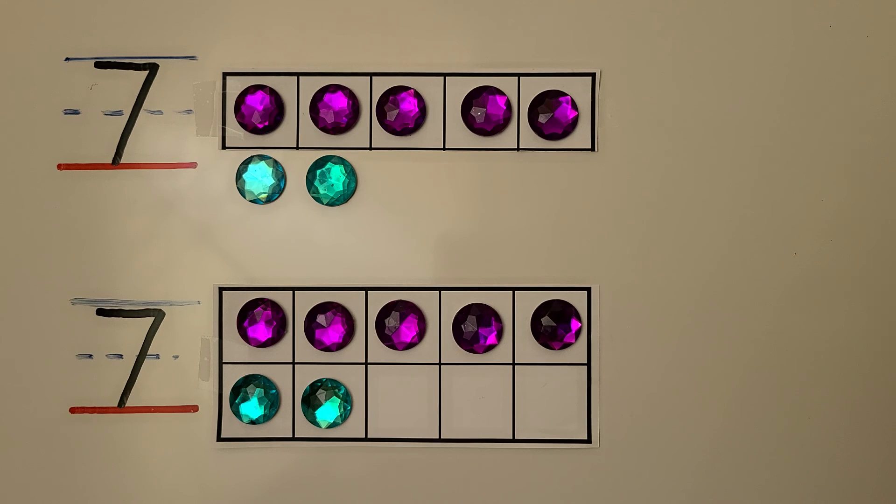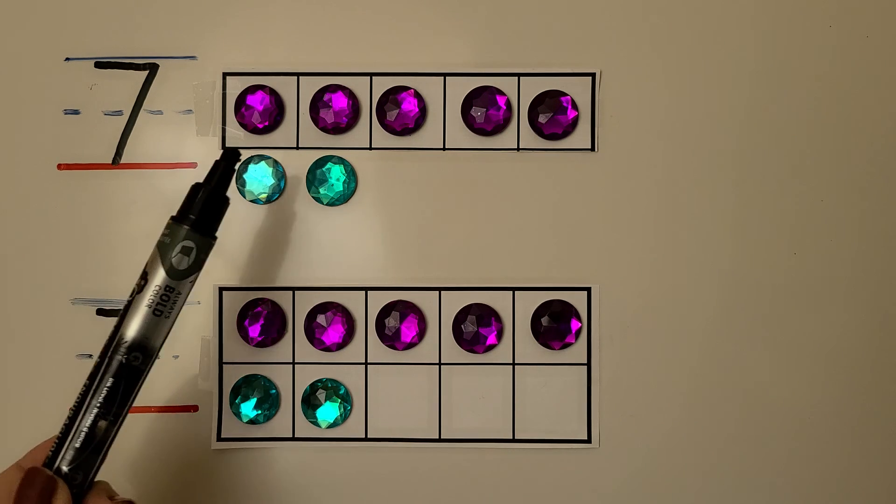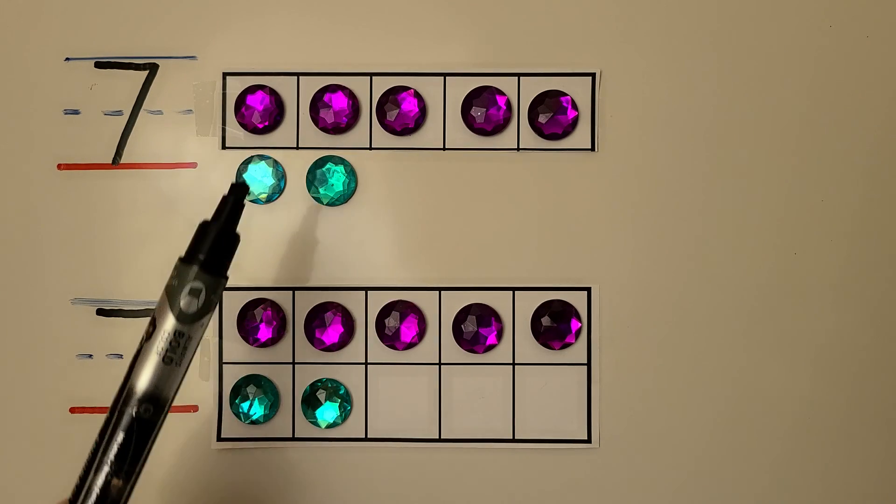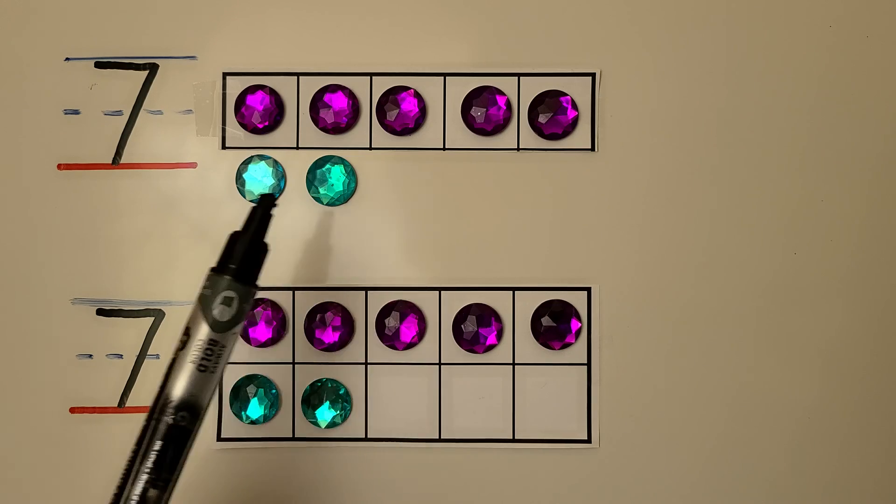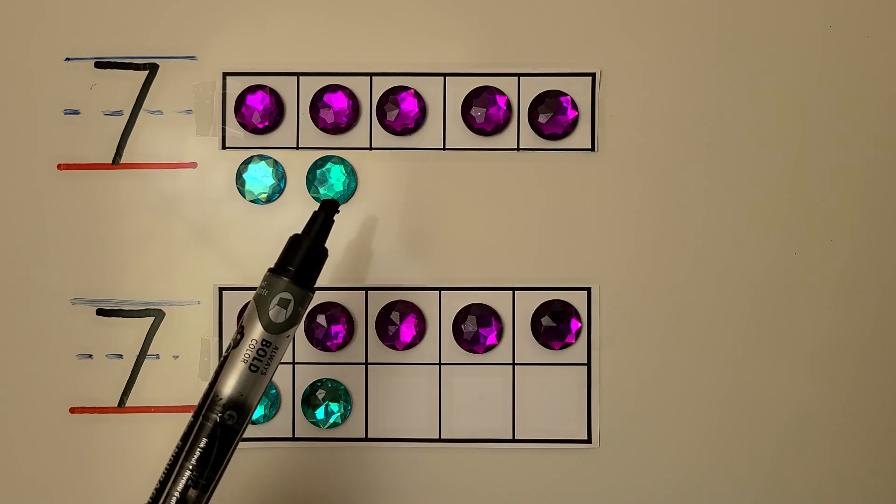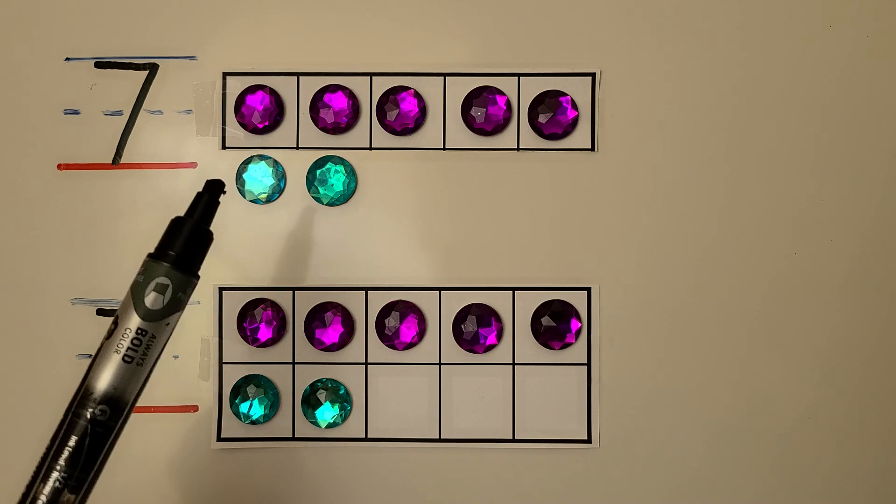We can show 7 as 5 and 2 more. Here we have a 5 frame that is full. We have 5 purple counters. We have 2 counters under the 5 frame. We have 5, 6, 7. There's 7 counters.